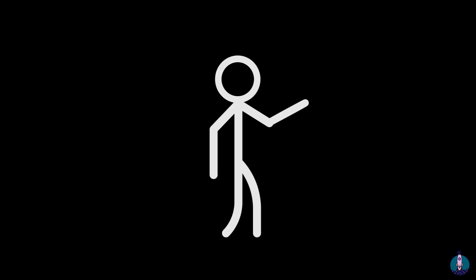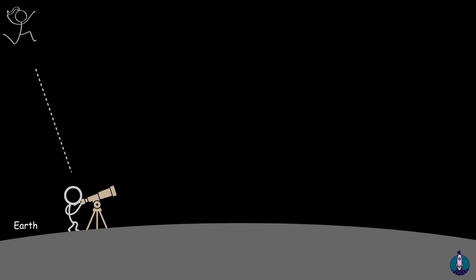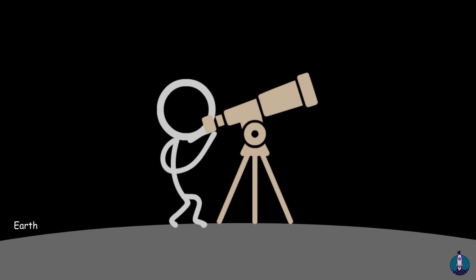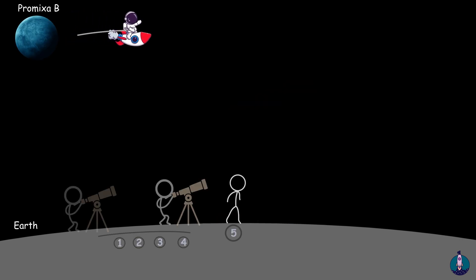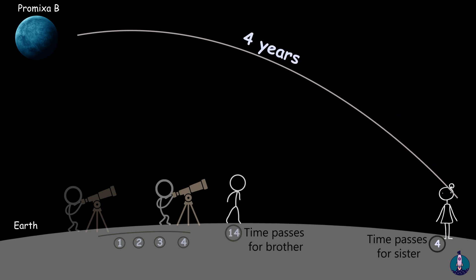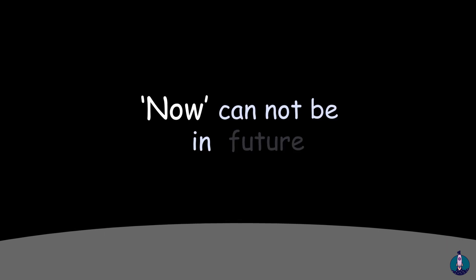So perhaps you can say that what your sister is doing now is what she will be doing four years after the moment that you see her through the telescope. But no, this does not work. Four years after you have seen her through the telescope, in her time she might already have returned to Earth and could be ten terrestrial years in the future. But now cannot be in the future.